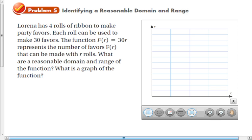The last thing we're going to do is just talk about what a reasonable domain and range is. Again, remember domain is the input values or x values, independent variable. Range is the output. So we've got a problem here. Lorena has four rolls of ribbon to make party favors. Each roll can be used to make 30 favors. The function f of r equals 30 times r represents a number of favors f of r that can be made with r rolls. What is a reasonable domain? So what are possible input values? And our input variable is r, which is the rolls. So we're going to say that the least number of rolls that we can use, so this is our domain, is 0 and that's the number of rolls and the most we can have is 4.